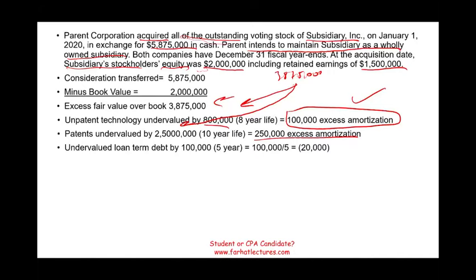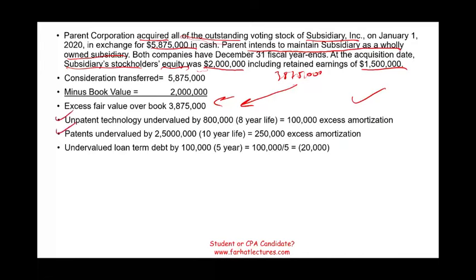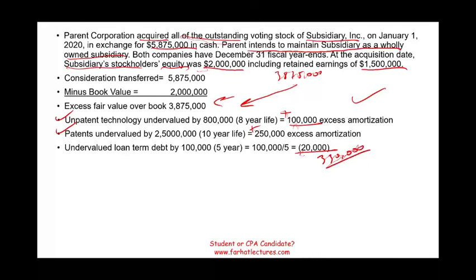We also have an undervalued long-term debt by $100,000, so we're going to have to add $100,000 to our debt. Over five years, that's $20,000 per year. Those are the three amortization or expense computations we have to undergo during the consolidation process — we're adding more assets, so we have more expenses; we're adding more debt, so we have more interest expense. If we net them out: plus $100,000, plus $250,000, minus $20,000, gives us a total of $330,000.